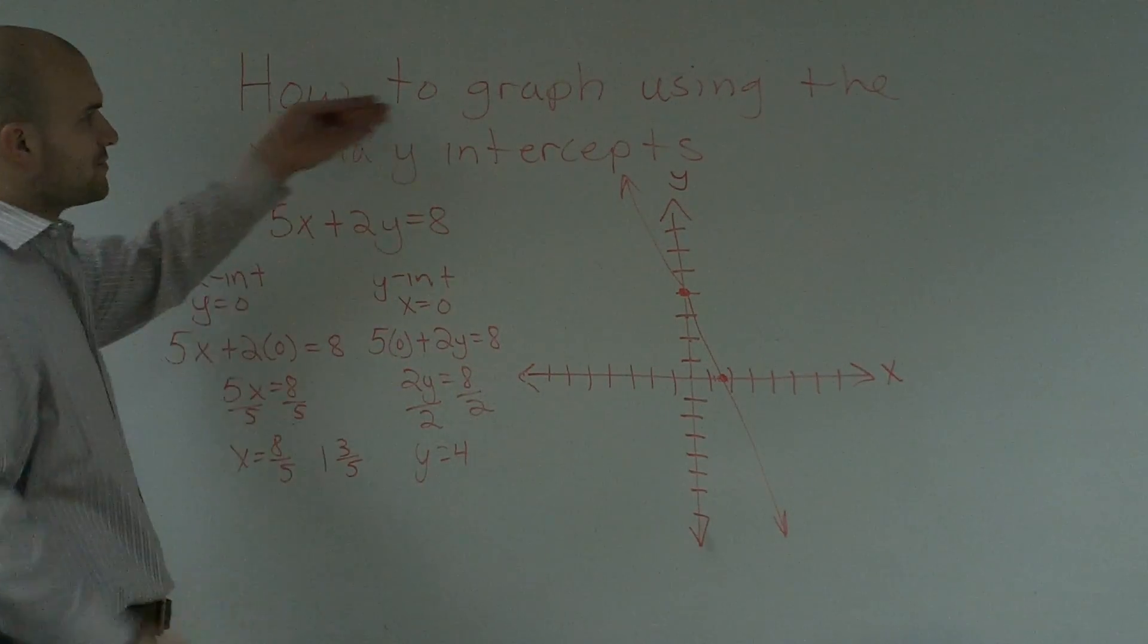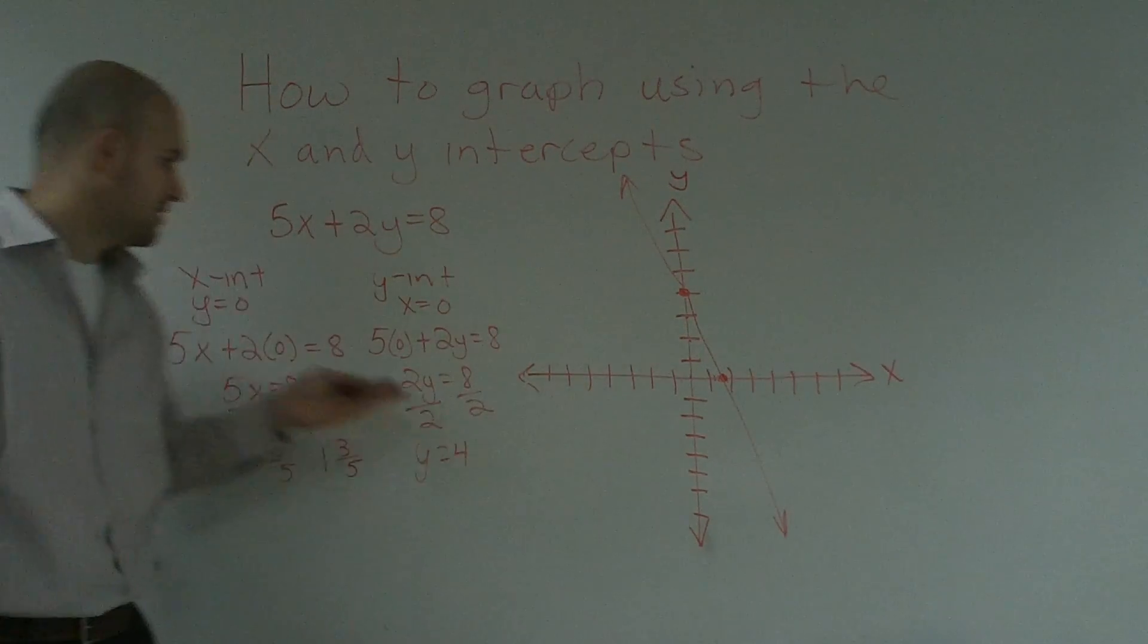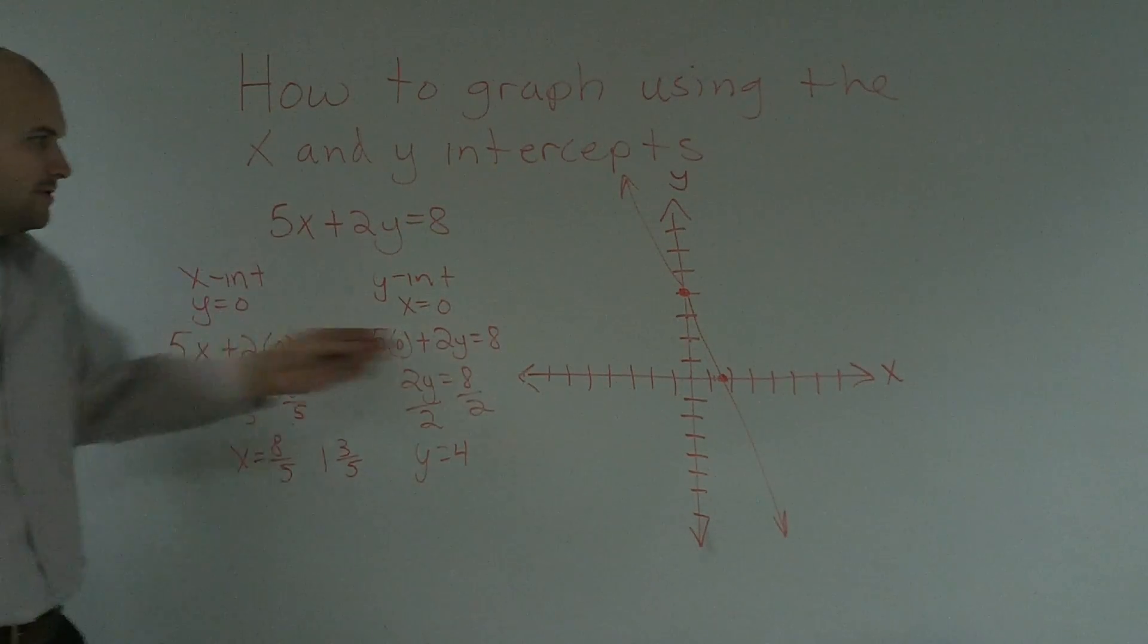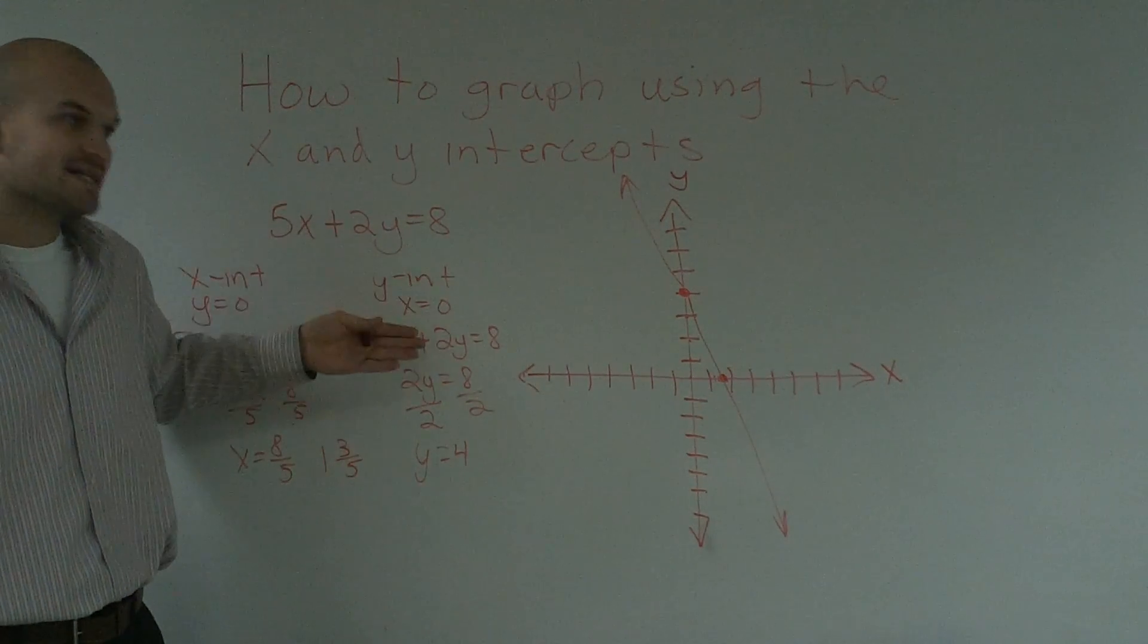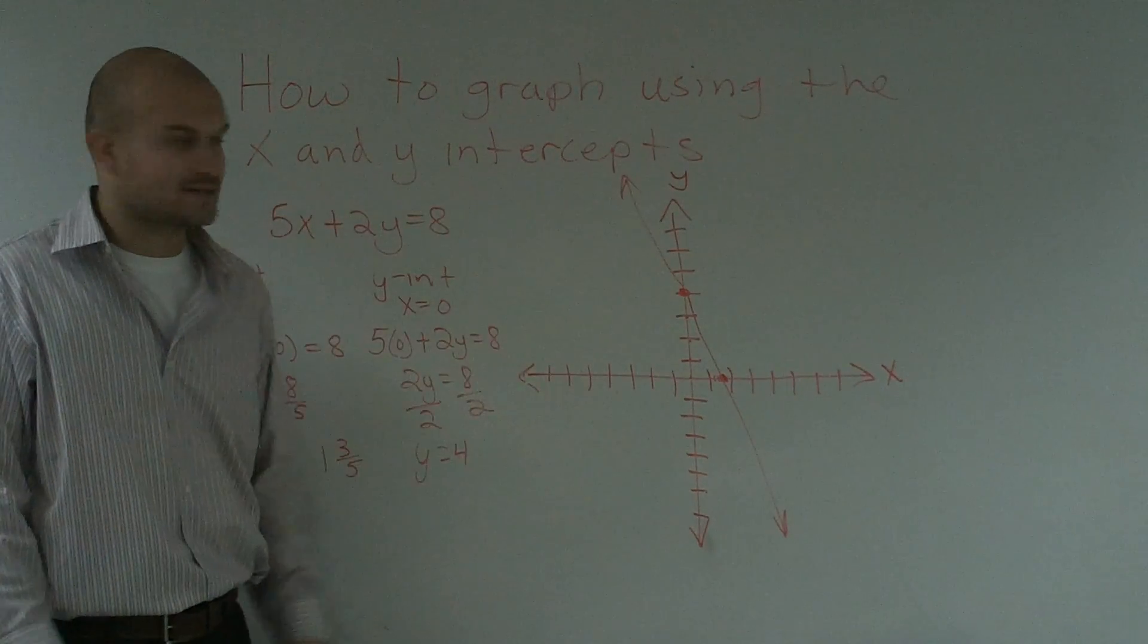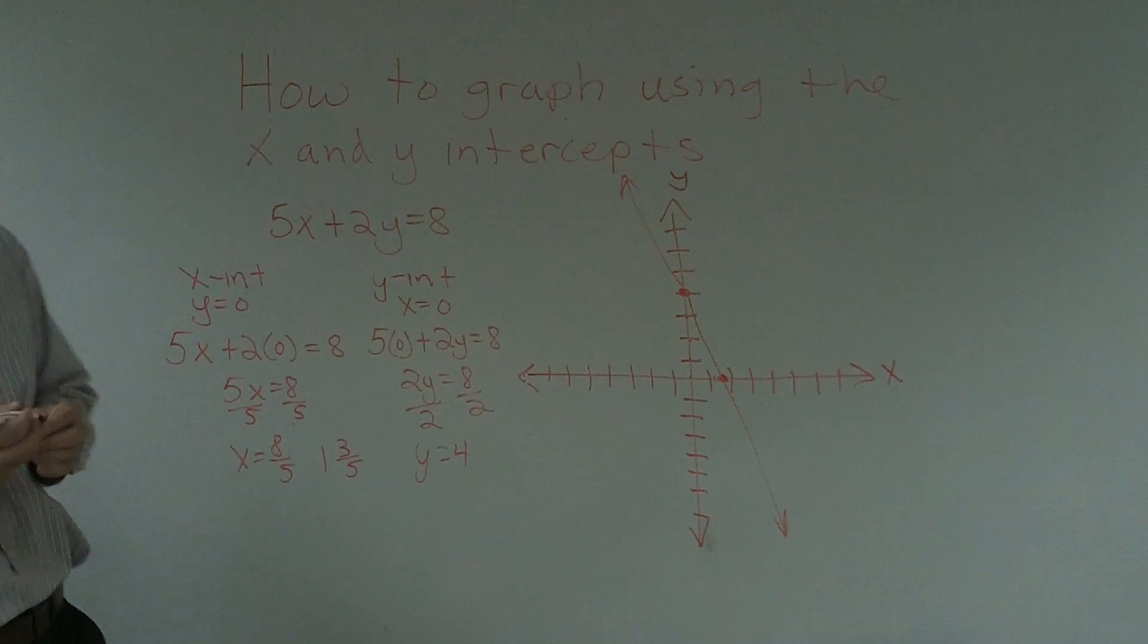So the main important thing is when graphing using the x and y-intercepts, to find the x-intercept, you put y for 0, and then plot it on the x-axis. And to find the y-intercept, you put x equals 0, and you plot it on the y-axis. And so, that's how you graph using the x and y-intercepts.